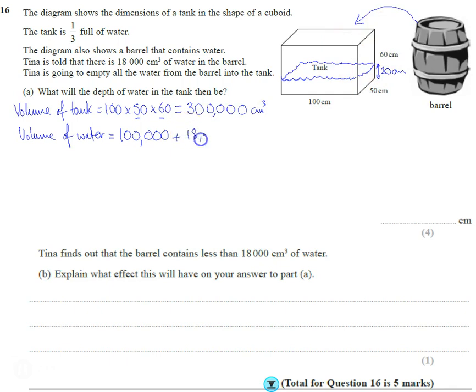And then we're going to put that extra 18,000 in which gives us a total of 118,000 centimeters cubed. Okay, so that's how much water is in the tank. We want to find out how far that goes up. It's going to go up a little bit more, it's not certainly going to fill it, it's only added a little bit in.